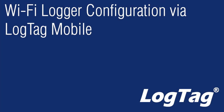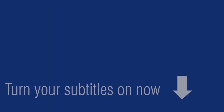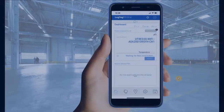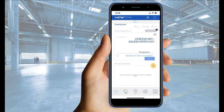To add a new configuration profile to your Wi-Fi logger, ensure you have registered your logger and connected it to your Wi-Fi network. If a location slot was available, your logger's Channel 1 location will have been auto-allocated to this empty location slot.